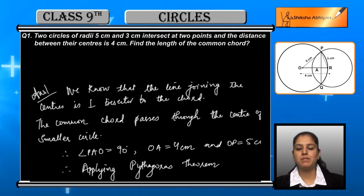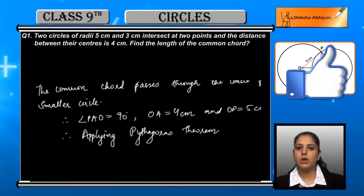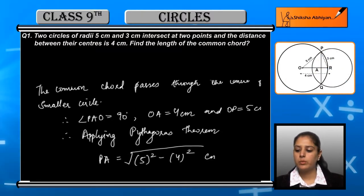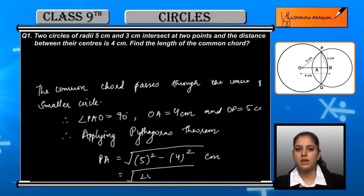If we find the PA value, it will be equal to the square root of 5 squared minus 4 squared centimeters, which is equal to the square root of 25 minus 16 centimeters, which is ultimately equal to the square root of 9, which is 3 centimeters.